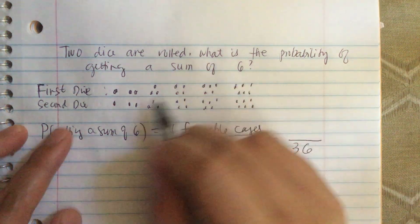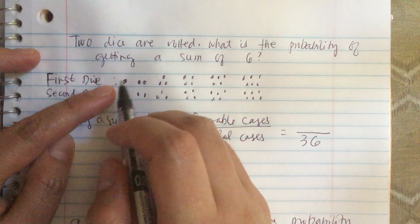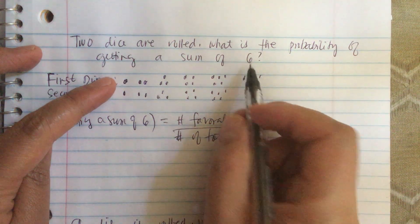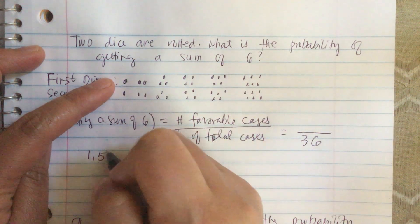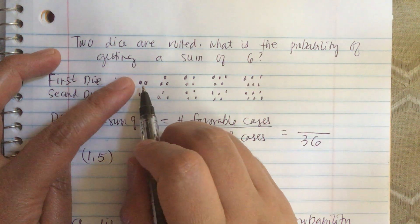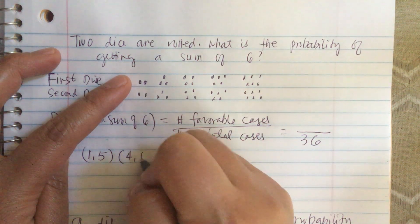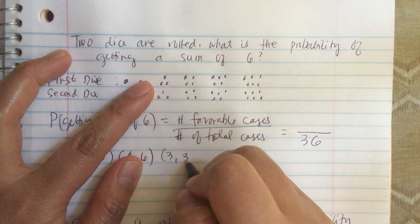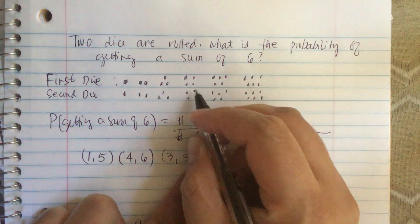Now let's list all the favorable cases where the sum is six. If the first die is one and the second die is five, that's six. A two and a four is also a possibility. Then three on the first die and three on the second die, and four on the first die and two on the second die.